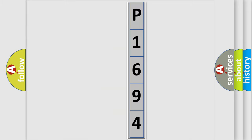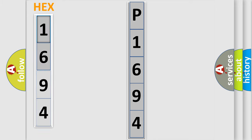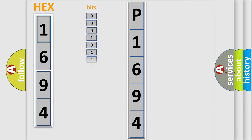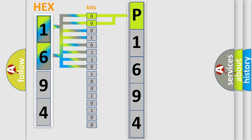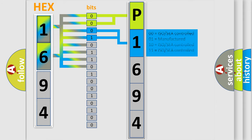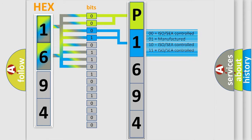The error code is split into two bytes consisting of 16 bits. One bit is the basic unit that each computer works with. The bit has two logical states: zero, low level, and one, high level. By combining the first two bits, the basic character of the error code is expressed. The next two bits determine the second character. The last four bits of the first byte define the third character of the code.